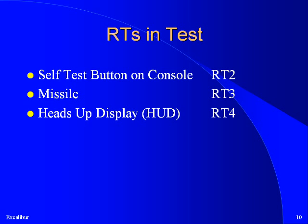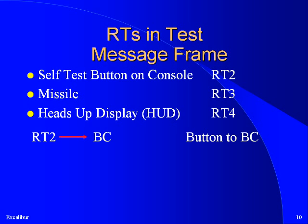Now let's give names to the various devices in our scenario. The button that the pilot presses to initiate the self-test we'll call RT2. The missile being tested we will call RT3. And the display that the results are reported on we'll call RT4. The bus controller periodically checks the button RT2 to see if it has been pressed by sending an RT-to-BC message to RT2. RT2 may respond with a data word of 0 to indicate the button has not been pressed and a data word of 1 to indicate that it has. The bus controller will then send this data word to the missile RT3 using a BC to RT message.